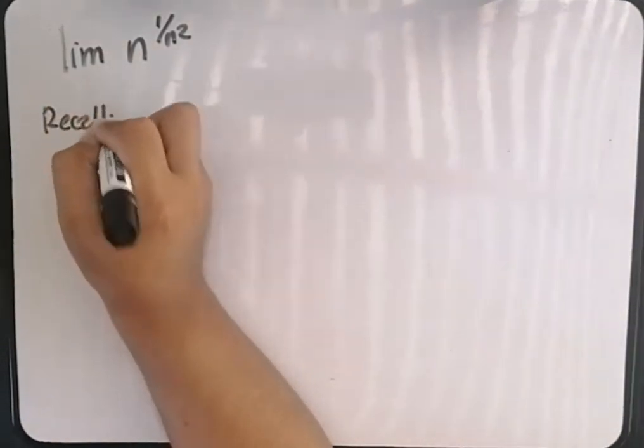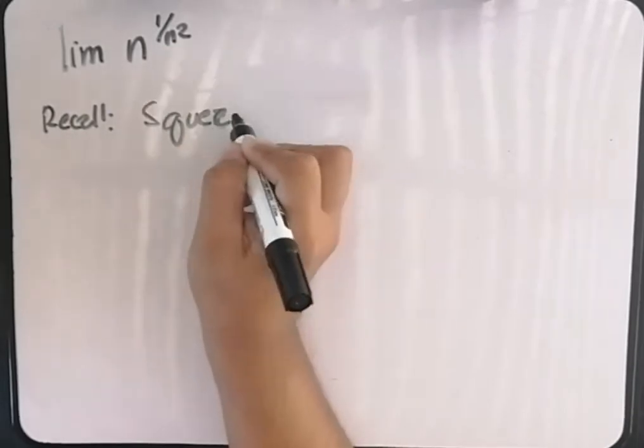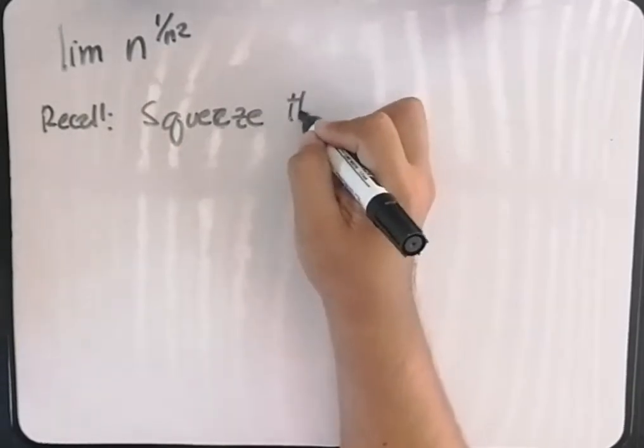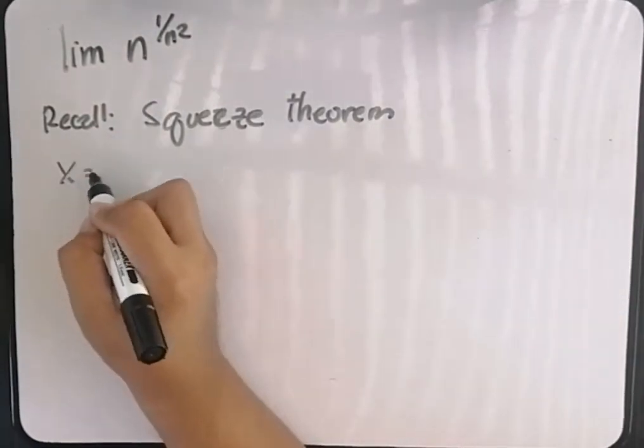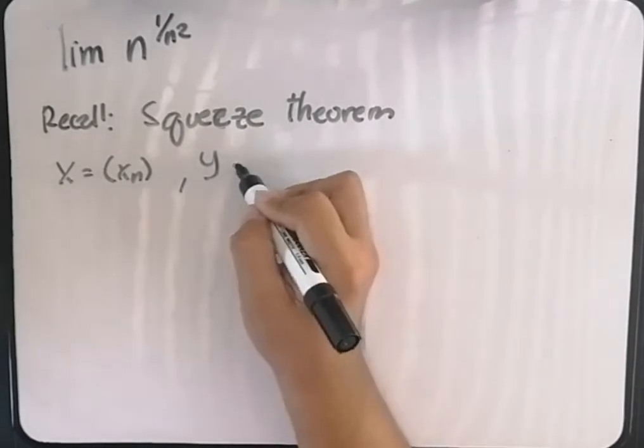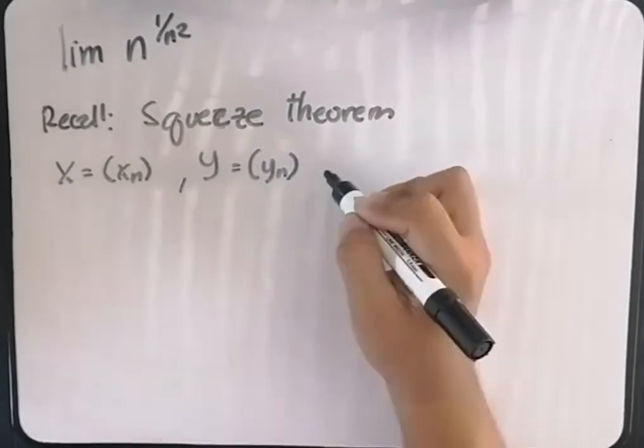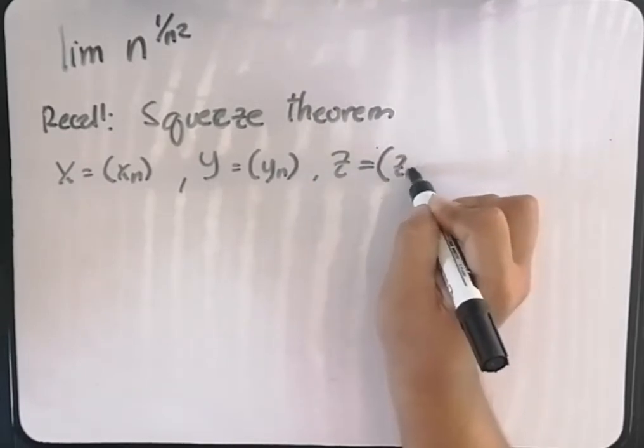Recall the squeeze theorem. Say we have x to be the sequence x sub n, y to be the sequence y sub n, and z to be the sequence z sub n.